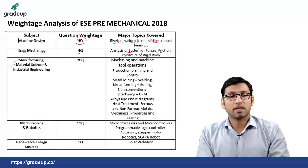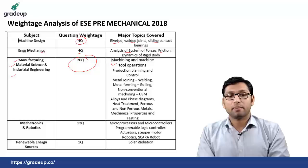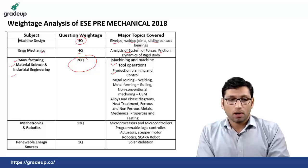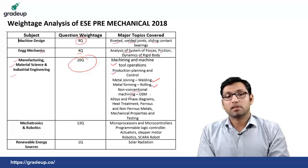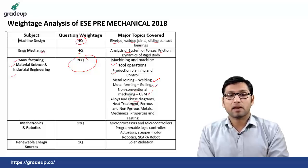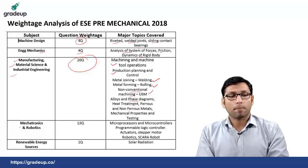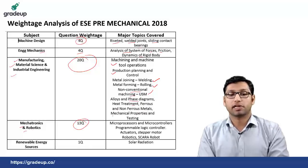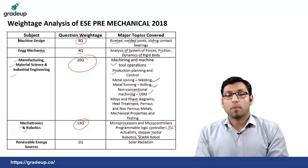From manufacturing, material science and industrial engineering, total there were 20 questions from the topics of machining and machine tool operation, production planning and control, welding from metal joining, rolling from metal forming, ultrasonic machining from non-conventional machining, alloy and phase diagram from material science, heat treatment, ferrous and non-ferrous metal, and mechanical properties and testing. From mechatronics and robotics there were 13 questions from microprocessor and microcontrollers, programmable logical controller (PLC), actuator, stepper motor, robotics and SCARA robot.